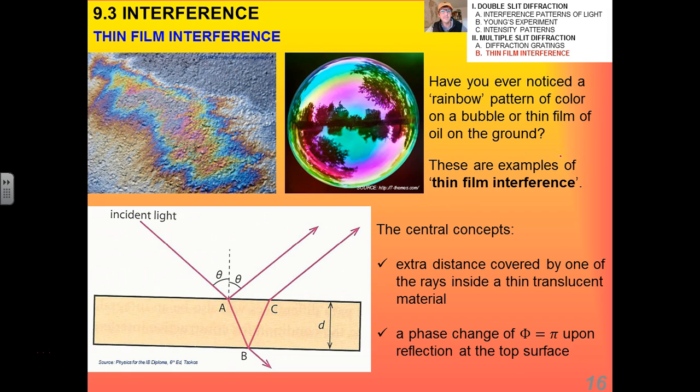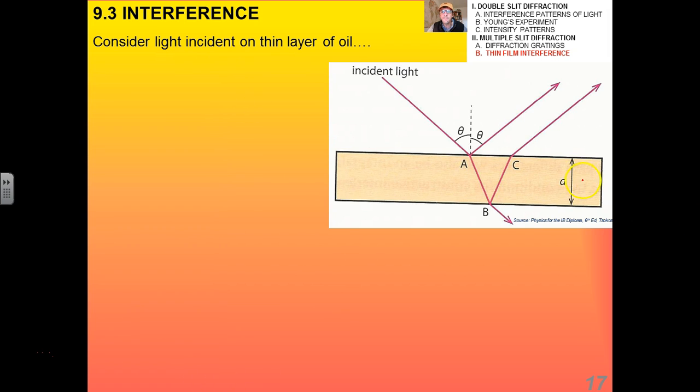The central concepts to thin film interference are as follows. Number one, you have an extra distance which is covered by one of the rays when it's inside a thin translucent material. You have to have a material through which a light ray can eventually pass, but one in which there is internal reflection. We assume that we're not at that critical angle where the entire incident light ray is reflected. There's got to be some that's refracted within the actual thin film. The thin film here is given by a distance little d, that is the thickness of the soap bubble or the thickness of the layer of oil on the tarmac. The first one is that extra distance. And the second is a phase change.